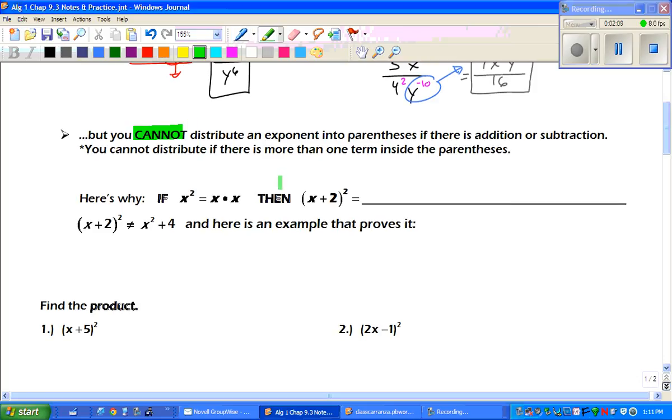You cannot distribute an exponent in parentheses if there is addition or subtraction. So here's why. If x squared equals x times x, then x plus 2, that's our exponent, it tells us how many of the bases we have. So that means we have x plus 2 times x plus 2.